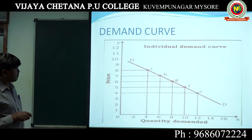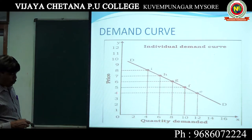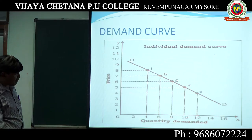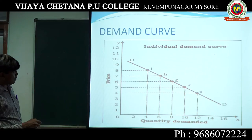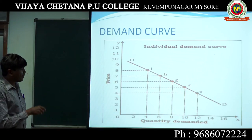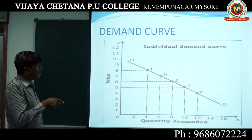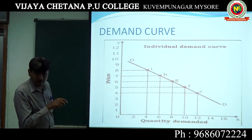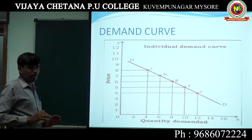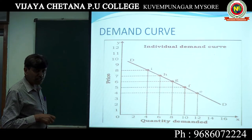When price is 4 per piece, quantity demanded is 12. When price increases to 5, demand decreases to 10. If price is 6, quantity is 8; if 7, quantity is 6; if 8, quantity becomes 4. The relationship between price and quantity demanded, when shown in a schedule is called demand schedule; when put in a diagram it is called demand curve. The demand curve always slopes downward from left to right because of the inverse relationship between price and demand.